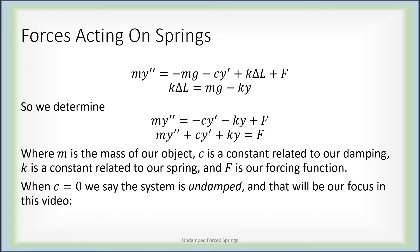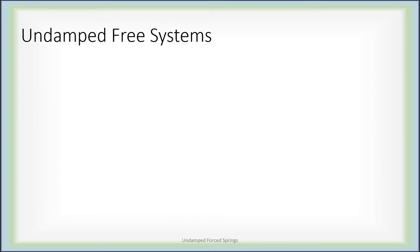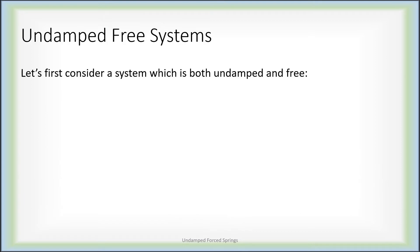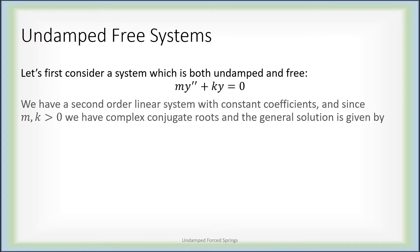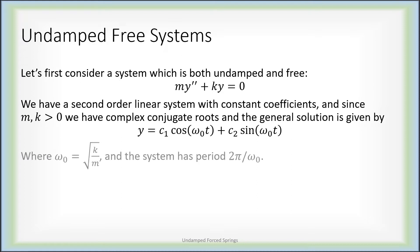When c is zero, that middle term vanishes — we have no damping force, called an undamped system. For the rest of this video we consider undamped systems; the next video will treat damped systems. With no damping force, the differential equation becomes simply my double prime plus ky equals F. For a free undamped system — no forcing function — we have a homogeneous second-order linear ODE. Since m and k are both positive, the characteristic polynomial gives complex conjugate roots. The general solution is c1 times cosine of omega naught t plus c2 times sine of omega naught t, where omega naught equals the square root of k over m.